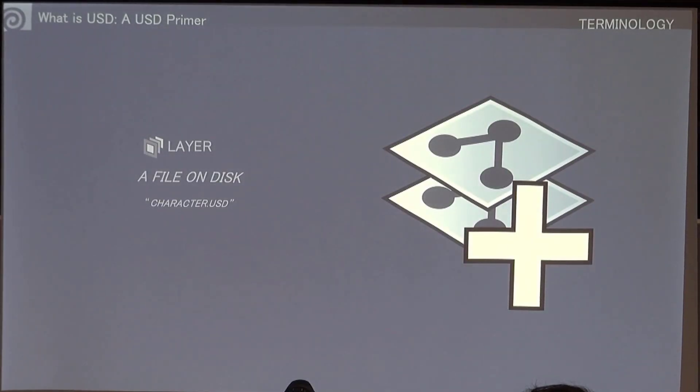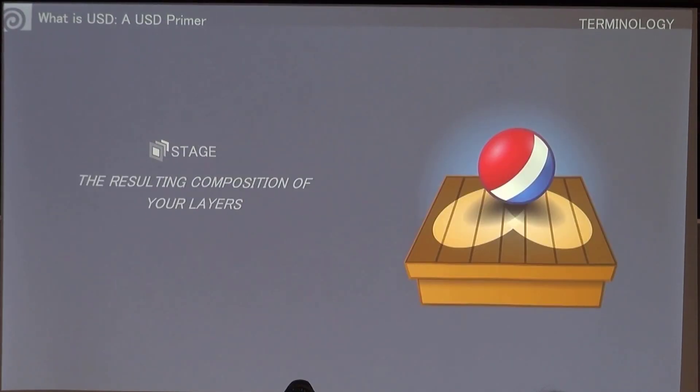Let's talk about a few important terms with USD. The first one is layer. I'll be saying that a lot. The layer is a file on disk. That means the layout USD is a layer, but so are the assets underneath. Those are also layers, and that shot USD file is a layer.